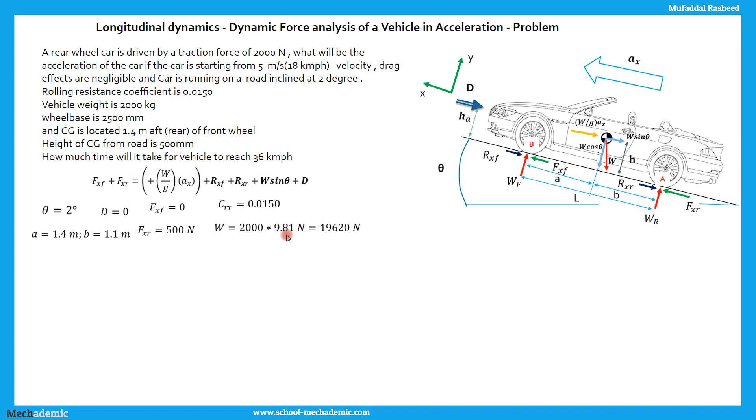Fxf plus Fxr, which is the tractive force at front wheel plus tractive force at rear wheel, is equal to W by G into Ax which is the inertia plus Rxf plus Rxr which is the rolling resistance forces plus W sin theta plus D which is the drag force. Considering D is equal to 0, the drag is negligible at low speeds. Theta is 2, Fxf is 0 because it is rear wheel driven car so the tractive force at the front wheel is 0. CRR here is 0.0150 which is the coefficient of rolling resistance.